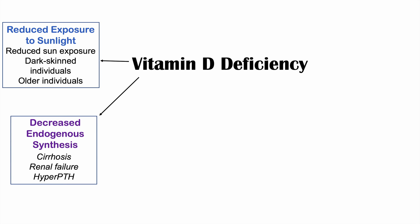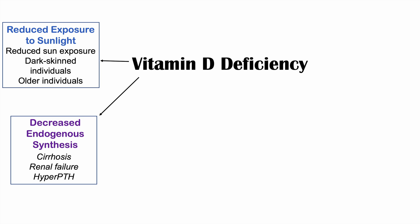Another category is decreased endogenous synthesis. This really has to do with the modification of vitamin D after it has been absorbed — specifically the liver and kidneys, which are important areas where vitamin D is modified and formed into its active mature form, calcitriol.